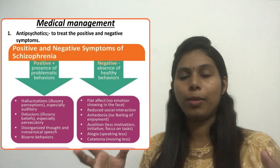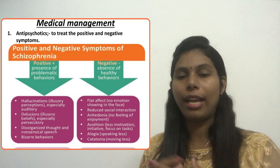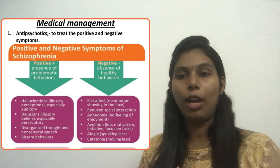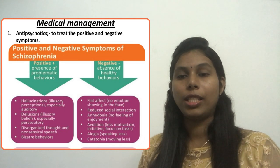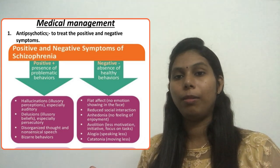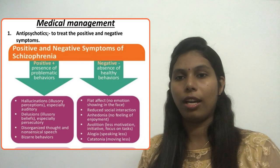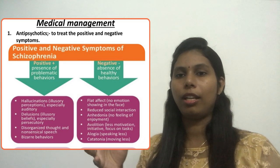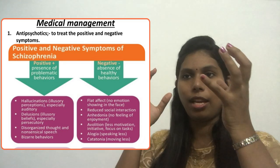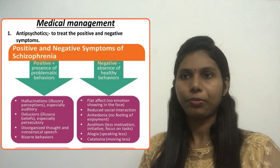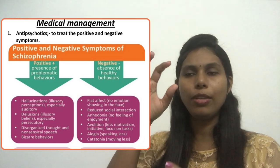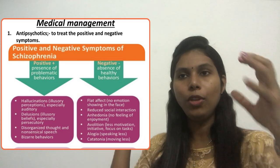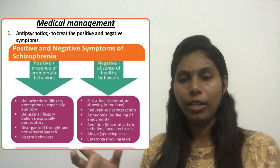Some examples of antipsychotics include chlorpromazine, haloperidol, and some clients get ziprasidone or risperidone. There is a whole group of medications under the antipsychotics category.